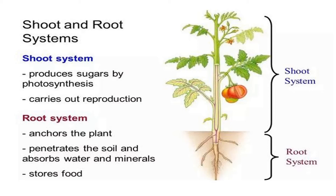Now children, can you tell me this? Plants are divided into two parts: root system and shoot system. In the previous video we learnt about root system, but now in this video we will learn about shoot system. You will think that root is underground — so where is shoot? The part of the plant above the ground forms the shoot system.